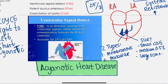The VSD may be membranous or muscular, because the ventricular septum has a membranous part and a muscular part. There are three sizes: less than 0.5 cm is a small VSD; 0.5 to 1 cm is medium; and more than 1 cm is a large VSD, which would definitely require surgical treatment.